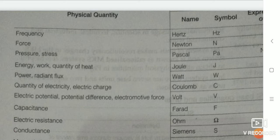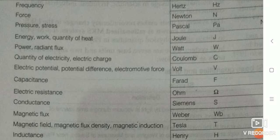Power — SI unit is watt, and symbol is W. Next is quantity of electricity or electric charge — SI unit is coulomb, and symbol is C. Next is electric potential difference or electromotive force. Next is capacitance — its SI unit is farad.